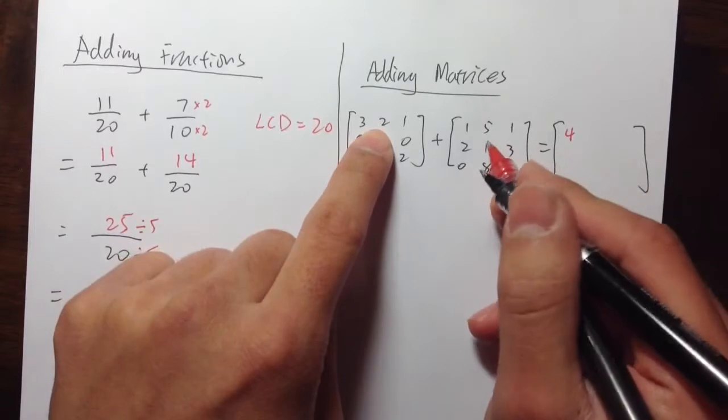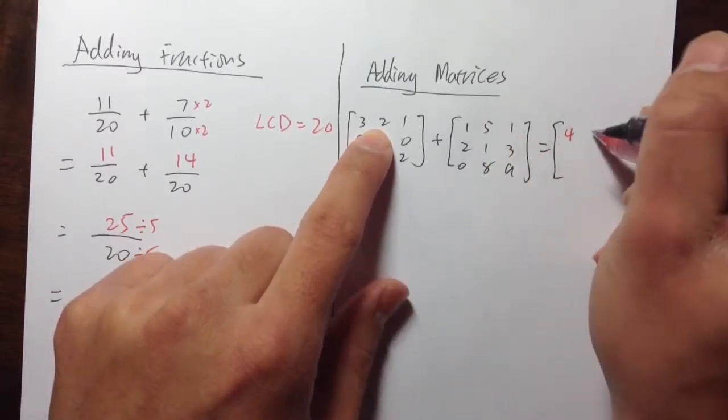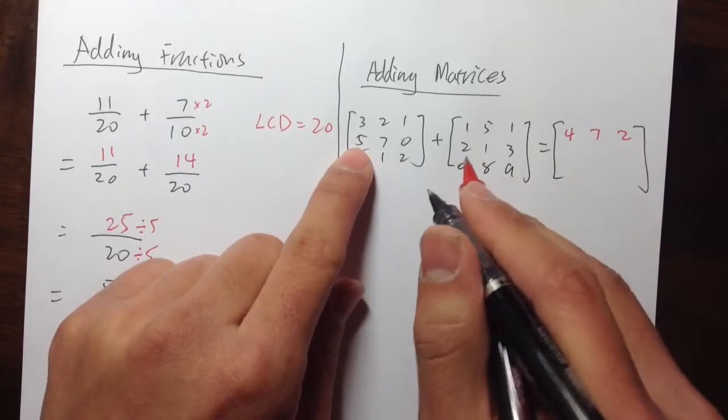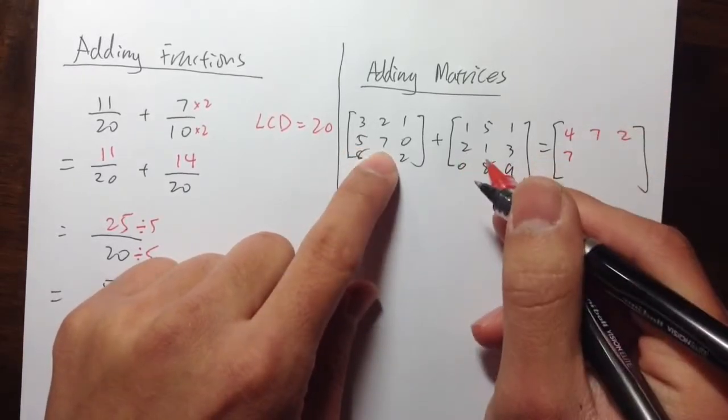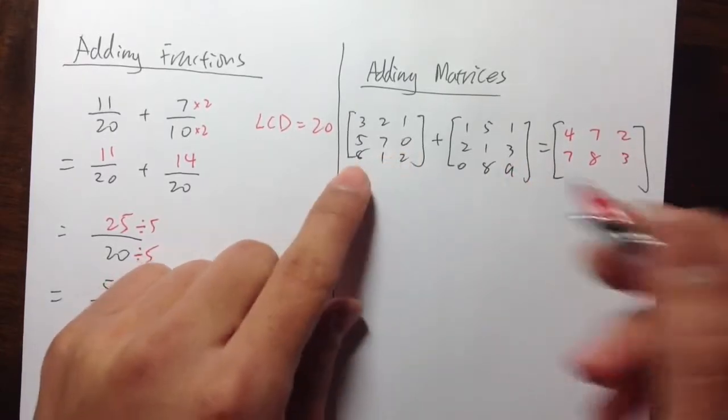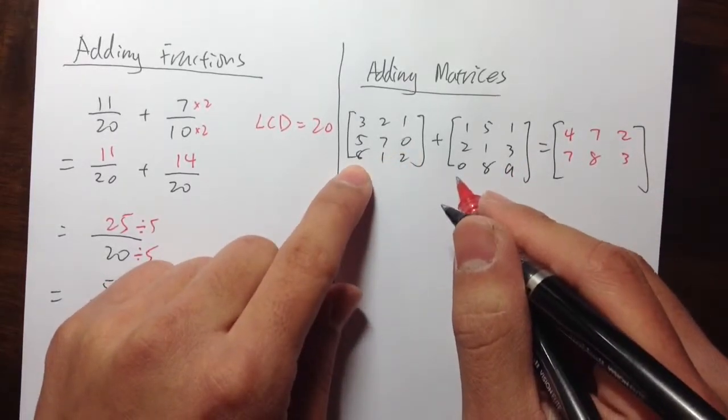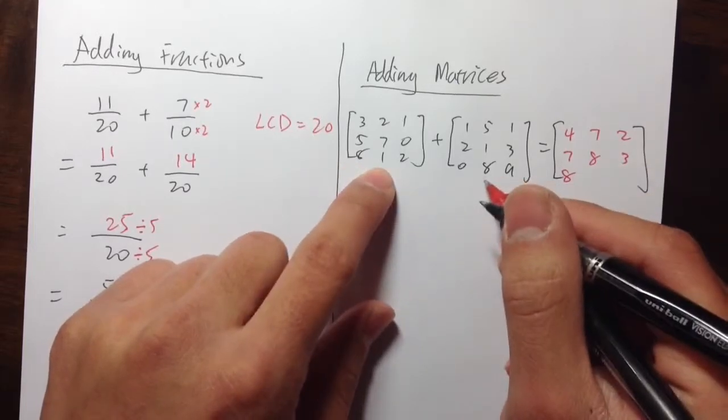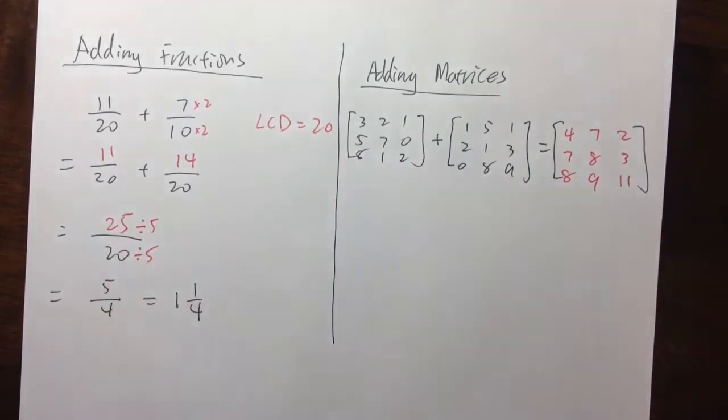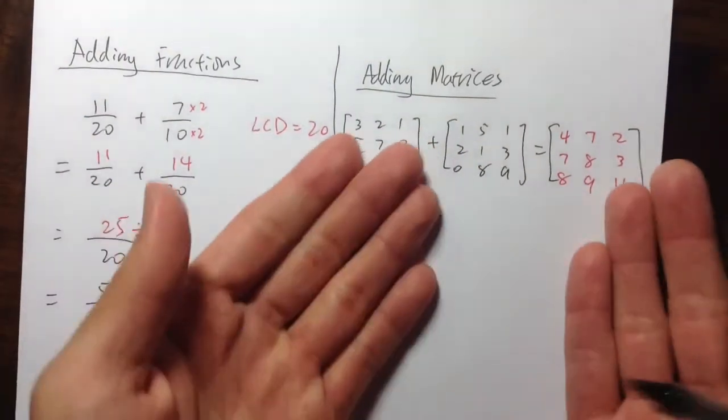And then continue with the rest. 2 plus 5 is 7. 1 plus 1 is equal to 2. And then move to the second row. 5 plus 2 is 7. 7 plus 1 is equal to 8. 0 plus 3 is equal to 3. And then third row. 8 plus 0 is 8. 1 plus 8 is 9. 2 plus 9 is 11. Nothing tricky at all. I pretty much just do 9 addition questions right here. That's all.